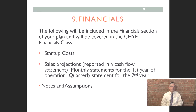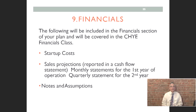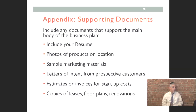We've gotten through eight components — the last section is financials. This will be discussed more fully in the financials class on Wednesday. You'll need to figure out your startup costs for the business, your sales projections. We'll want to see an Excel worksheet with first-year monthly projections, second-year quarterly projections, and notes and assumptions that back up how you came up with the numbers. How to figure out the exact numbers will be discussed fully in the financials class. The next section is the appendix — supporting documentation — which is not included in the 20-page limit.